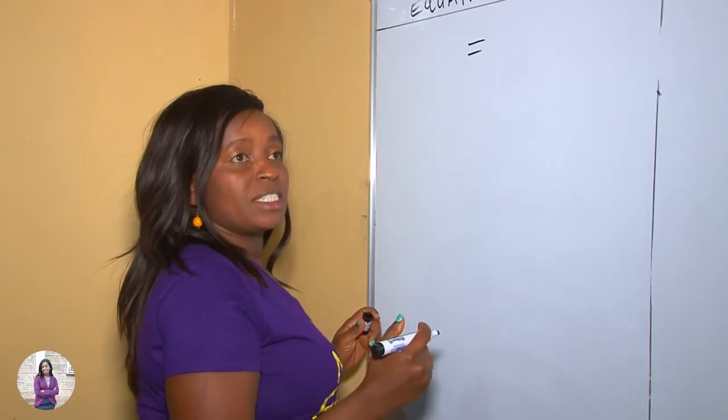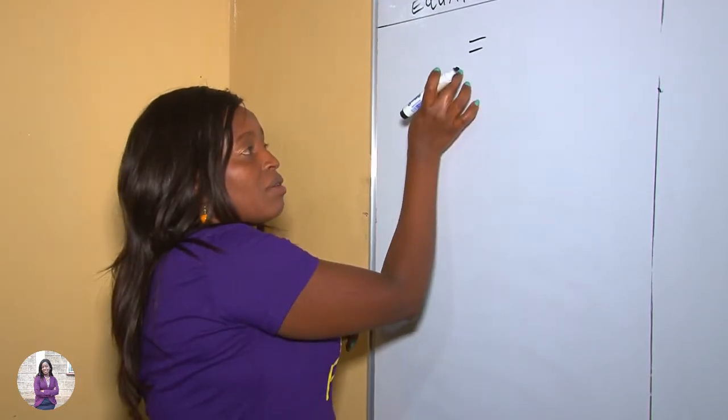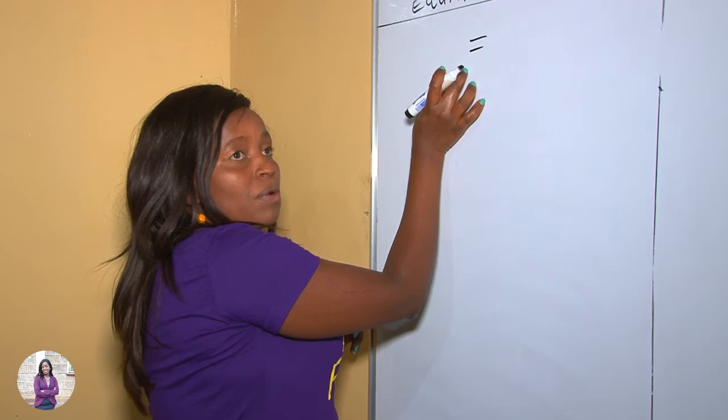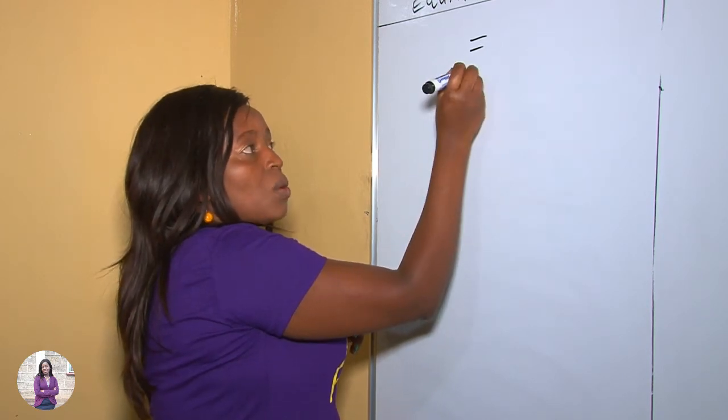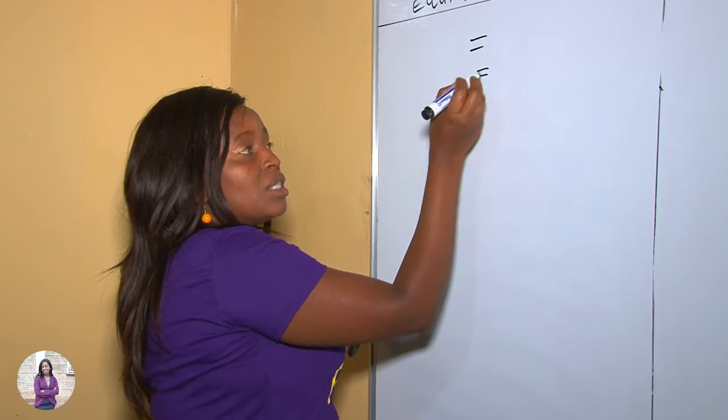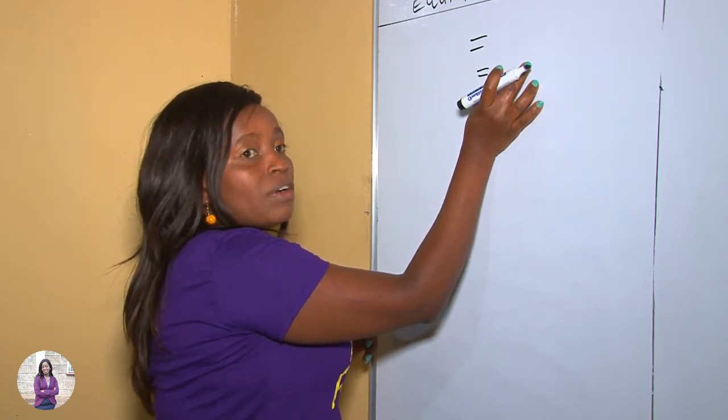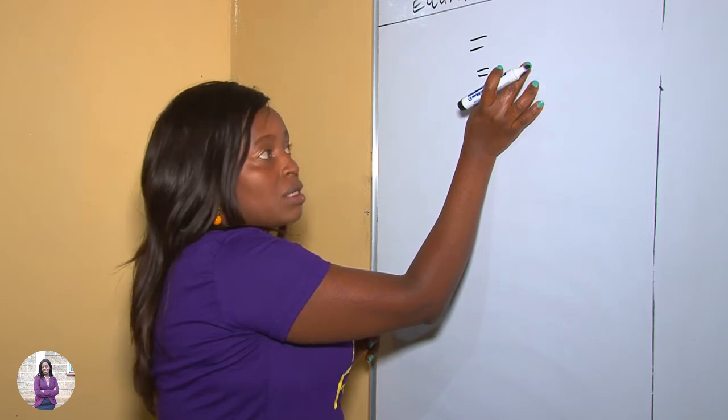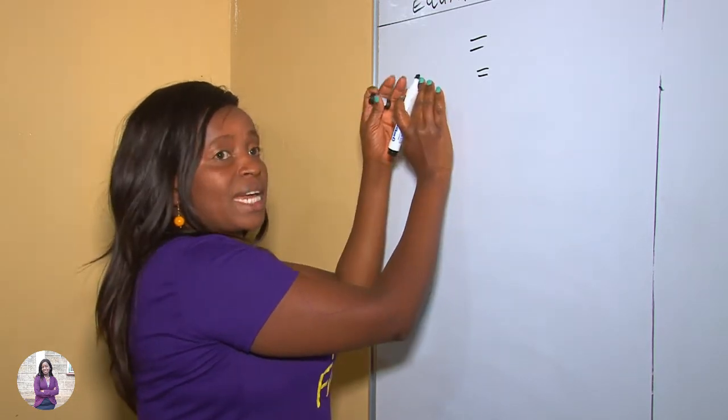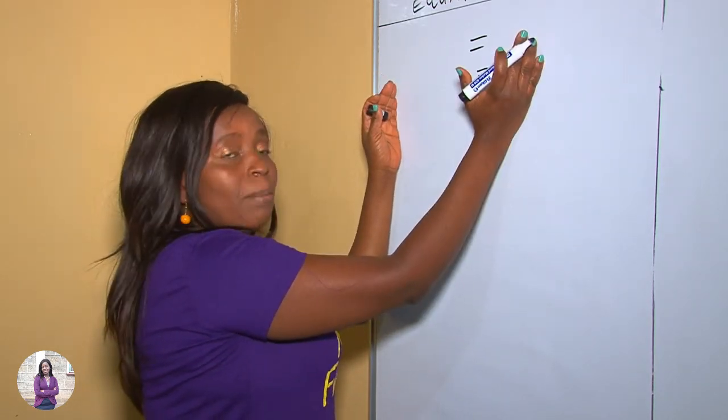For instance, if you have five mangoes on this side, we use equal sign. Meaning also the other side, there must be other five mangoes. Because this side, that is the left and the right, must balance.